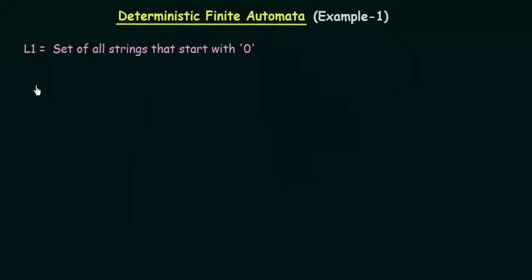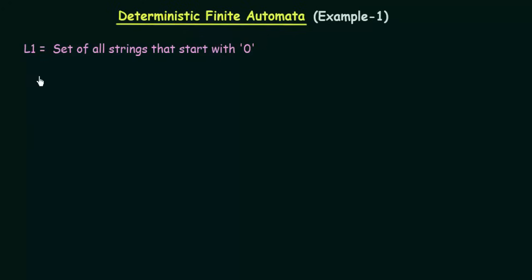We have an example here: language L1, which is the set of all strings that starts with 0. We need to design a Deterministic Finite Automata or DFA for this language L1. Let's see how we can do that.